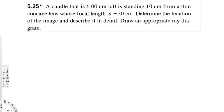Let's try this problem. A candle that is 6 centimeters tall is standing 10 centimeters from a thin concave lens whose focal length is negative 30 centimeters. Determine the location of the image, describe it in detail, and draw an appropriate ray diagram. Let's see how we can do it.